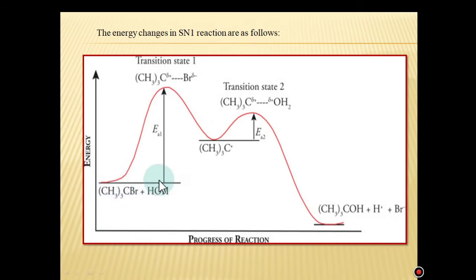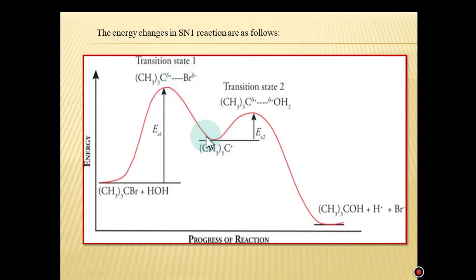This is the energy profile diagram of the SN1 reaction. This is the starting molecule, this is the nucleophile, this is the breaking of the C-Br bond, the formation of the carbocation, and then the formation of the new bond with the nucleophile, and finally the formation of the substituted product.